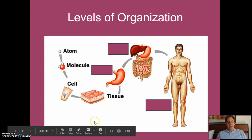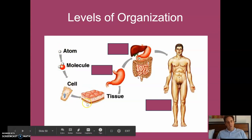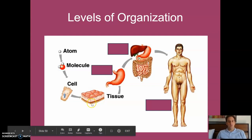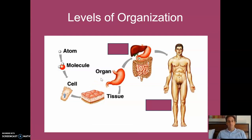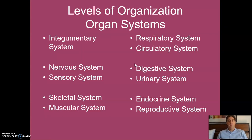That brings us back to the diagram: atoms and molecules you learned about in chemistry, cells in biology, and tissues — we just went through those four major types. For the rest of this course, we're going to focus on the rest of this flow map. Tissues group together into organs, organs into organ systems, and organ systems together make an organism. Organ systems will be our organizing principle as we go through system by system.